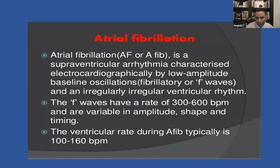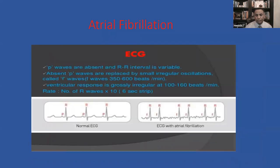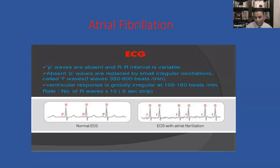By definition, atrial fibrillation is a supraventricular arrhythmia characterized by low amplitude electrocardiographic baseline oscillations — we call them the F-waves. The ventricular rate during AF is typically 100 to 160 beats per minute. In any arrhythmia, we talk about the atrial rate and the ventricular rate. In normal sinus rhythm the rate is the same in atrium and ventricle, but in atrial fibrillation the atrial rate is usually around 400 — you don't see it because these are very small wavelengths or sometimes what you see is a flat line.